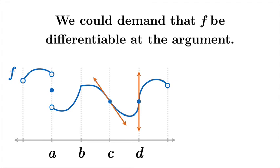Let's go with the demand that f be differentiable at the argument. So of course, a is still out of the picture, and now we can rule out b. c looks good, but now d is a problem.